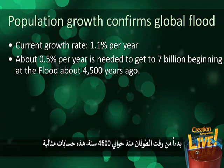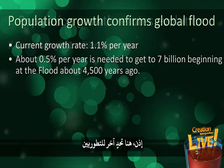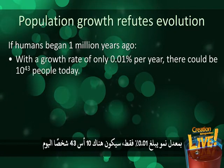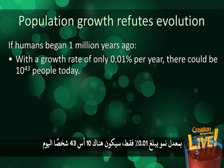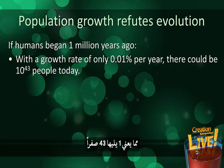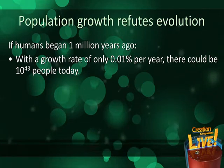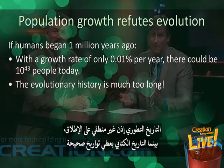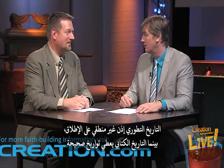Here's a challenge for evolutionists: if humans began 1 million years ago as evolution says, with a growth rate of only 0.01%, there would be 10 to the 43rd power people today — that's a one with 43 zeros behind it. So the evolutionary history is way off, and biblical history gives the right dates.